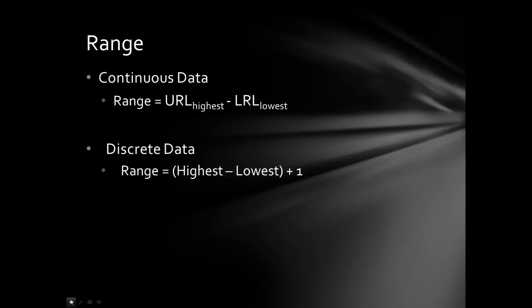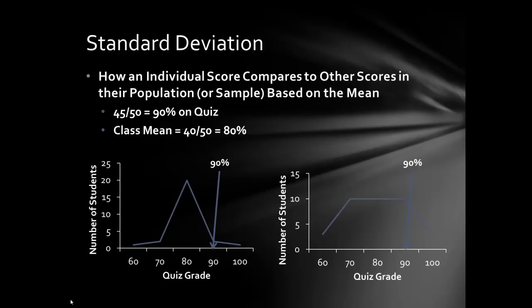Moving on to the standard deviation, which is the most commonly used measure of variability in this class and in most research. The standard deviation gives you information on how any given score compares to all of the other scores in the data set based on the mean. It tells you the distance of a specific score from the mean in terms of the typical spread of scores. For example, say you got a 90% on quiz 1 and you're really excited.